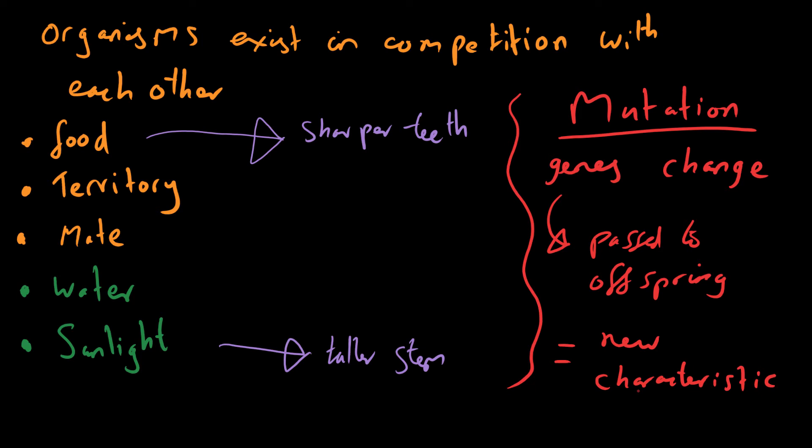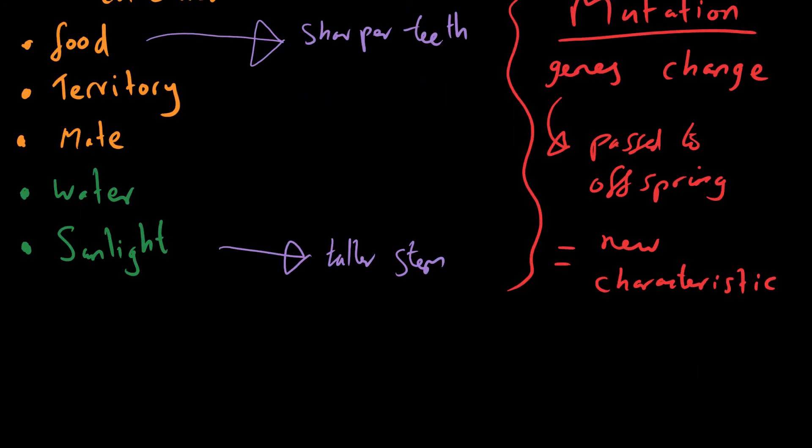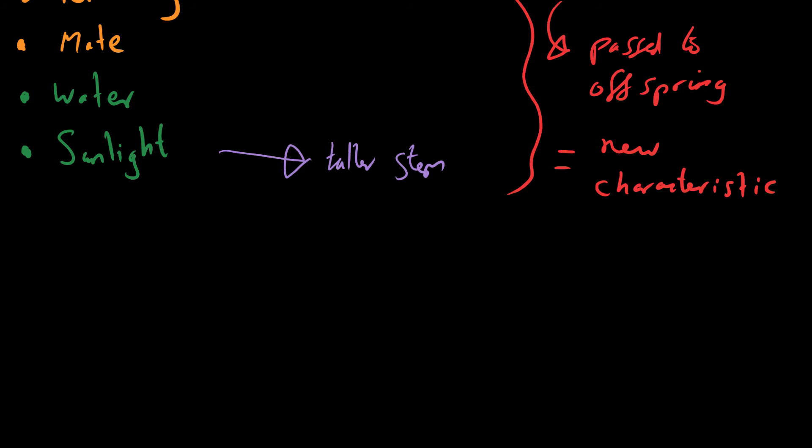Now how does that lead to natural selection? Well, it's quite simple. If we had a group of plants, let's say you've got these generic plants and they look like this. So they're reasonably small plants. But they are green plants and they do need sunlight. So they need sunlight. They're all going to be competing for that sunlight.